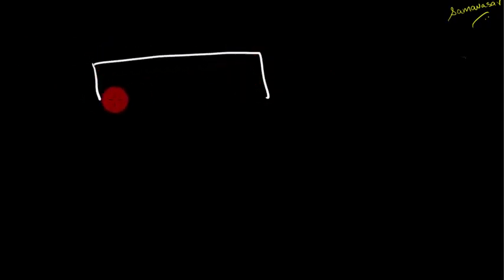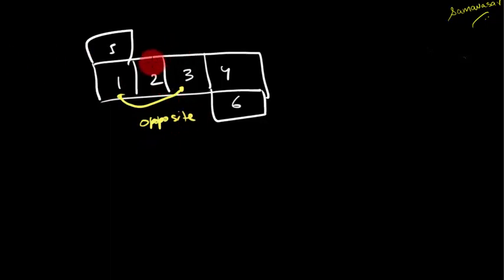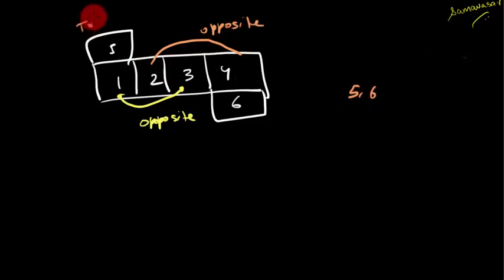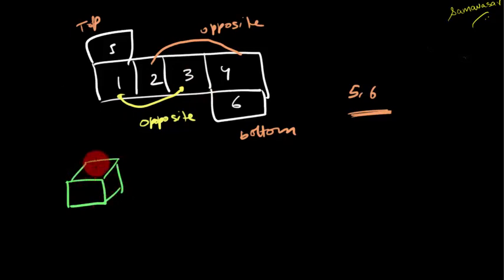Now I'd like to give you another concept. If I have a pattern numbered 1, 2, 3, 4, 5, and 6, you can find out by folding that 1 and 3 are opposite to each other. Similarly, 2 and 4 are opposite to each other. The remaining 5 and 6 — top and bottom — are also opposite. So the alternating ones are opposite to each other.